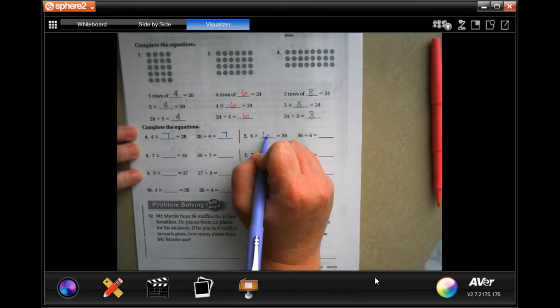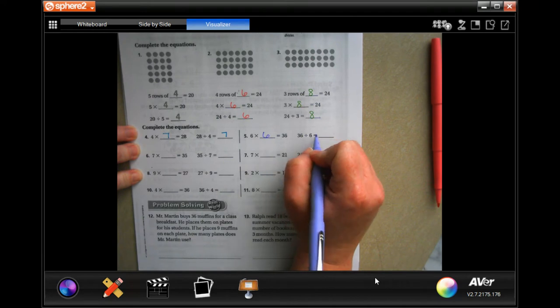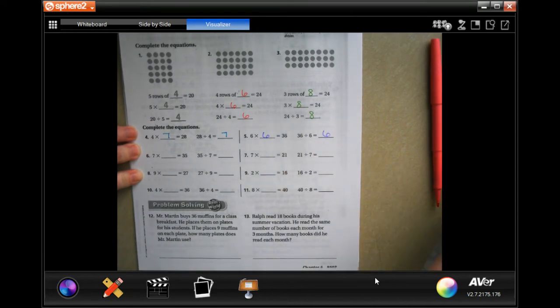Six times what is 36? Six times six is 36, which also means that 36 divided by six is six.